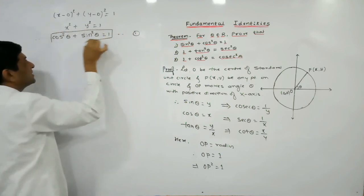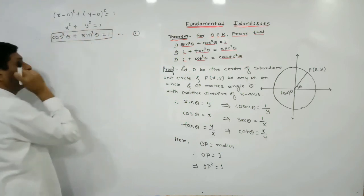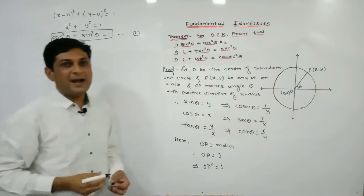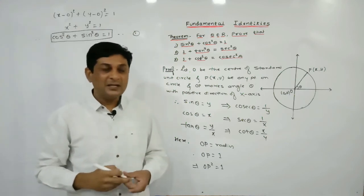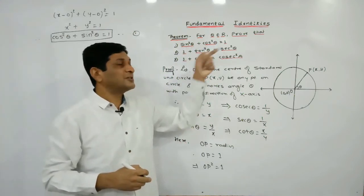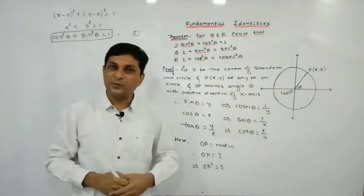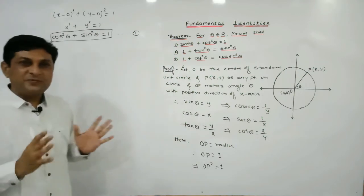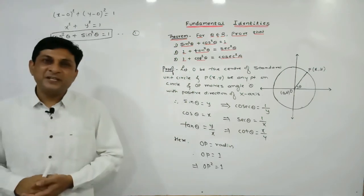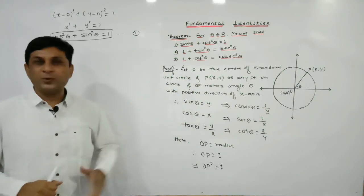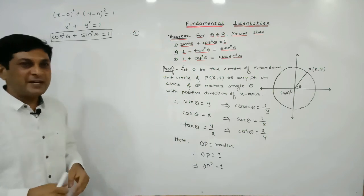Let us denote this as equation number 1, which is our first required identity: cos squared theta plus sin squared theta equals 1. Once the first identity is proved, we are easily able to prove the remaining two identities.